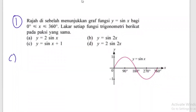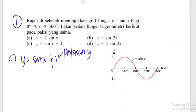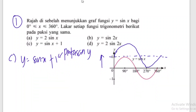Soalan C: Y sama dengan sin X plus 1. Ni plus C, C adalah pintasan Y. Pintasan Y jadi 1. Bila kita lukis graf, kita buat garisan Y sama dengan 1, graf dia mesti duduk di bahagian atas. Graf dia sama seperti sin biasa, cuma dia naik ke atas sebanyak 1 unit.